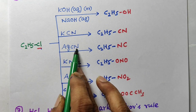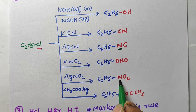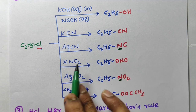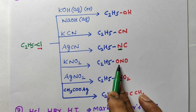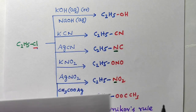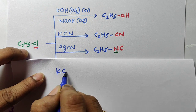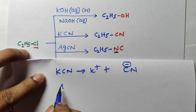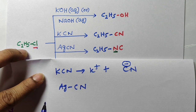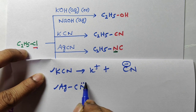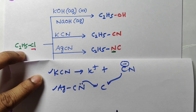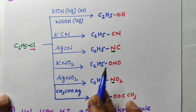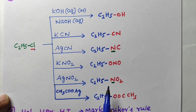If you observe carefully, when silver is in the reagent — silver cyanide (AgCN) and silver nitrite (AgNO2) — nitrogen is the attacking site. But for KCN and KNO2, other than nitrogen, oxygen is the attacking agent. KCN is an ionic compound — it splits into K⁺ and CN⁻, so CN⁻ attacks on carbon. AgCN is a covalent compound, so the lone pair on carbon attacks — giving isocyanide. Similarly, KNO2 is ionic: O⁻ attacks, giving nitrite ester. AgNO2 is covalent: nitrogen attacks, giving nitroalkane.